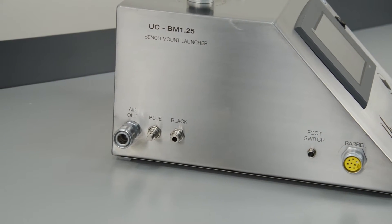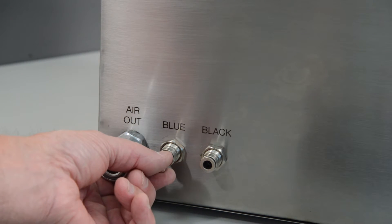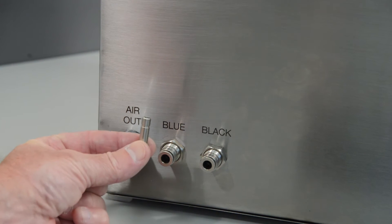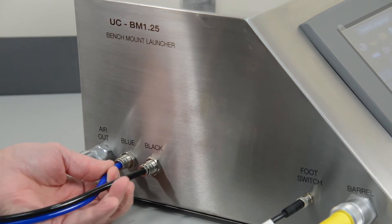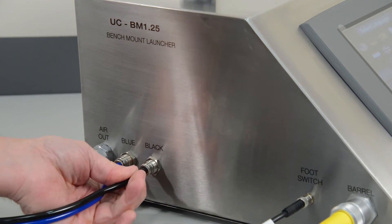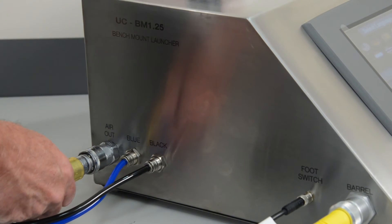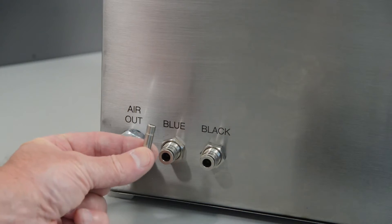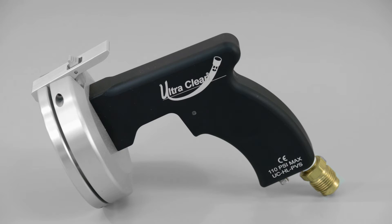When using the bench mount launcher, there is a plug in the fitting marked blue on the left side of the control station that must be removed before installing the twin-line tubing. Press the button in and then pull the plug out. Connect the blue and black twin-line pneumatic tubing to the fittings labeled blue and black and the plug end of the air hose to the coupler labeled air out. The plug is only required when operating the PVS with the handheld launcher.